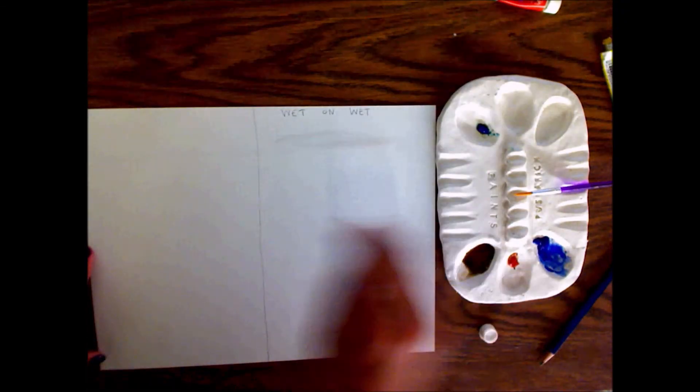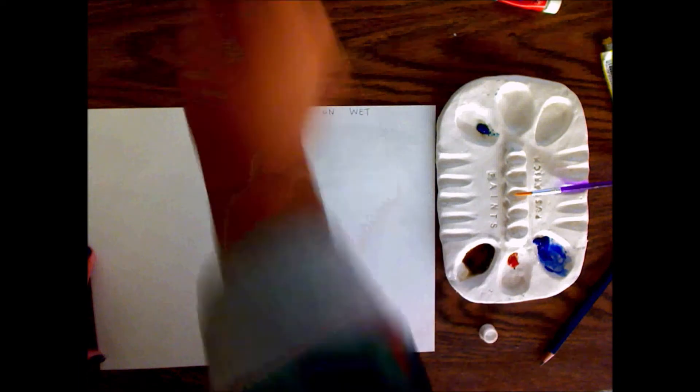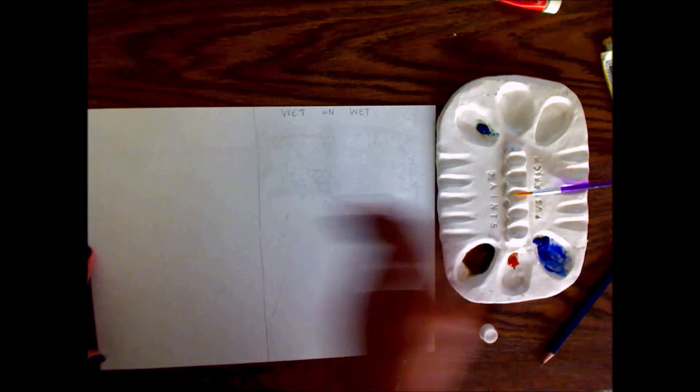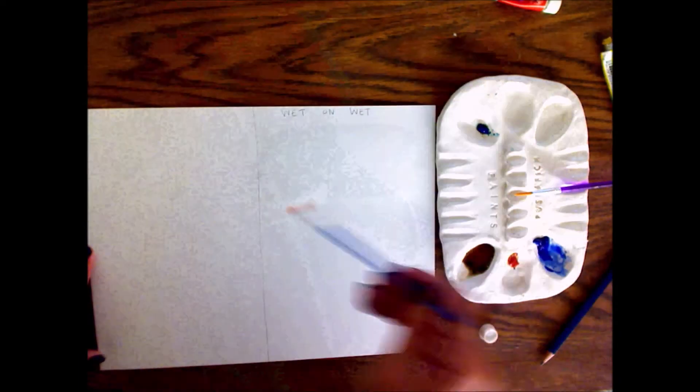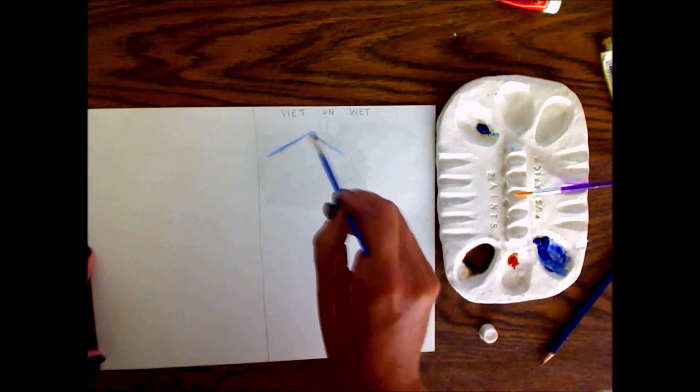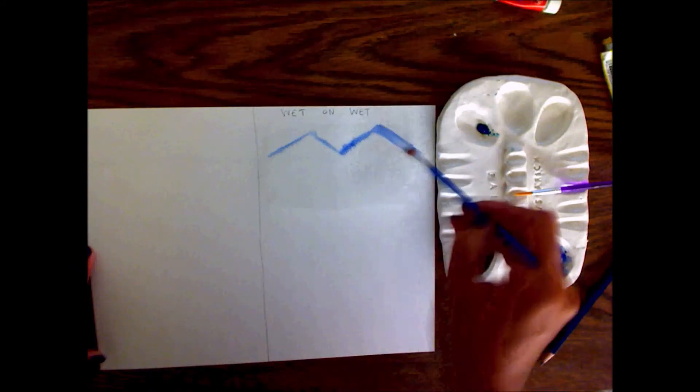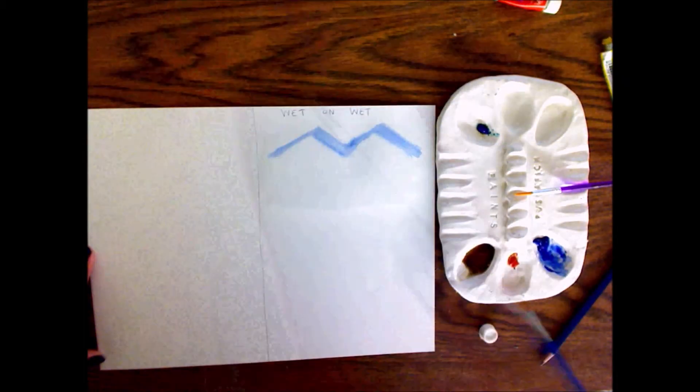The first technique I'm going to show you is wet on wet. I'm going to use the paintbrush to just wet the paper before I even paint it. I'm only going to wet where I want to paint. You can see that I can make lines, but the lines kind of bleed out.